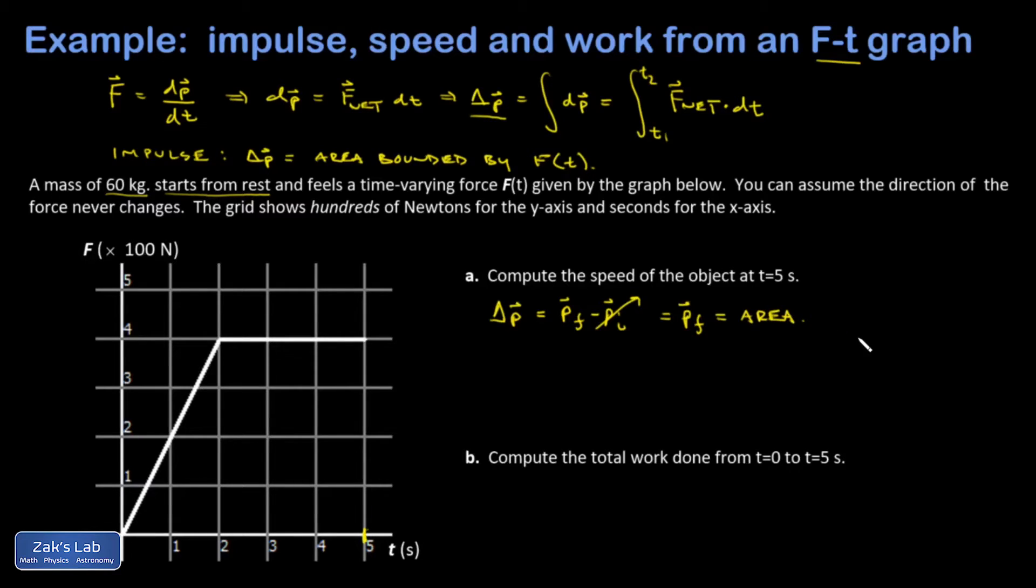So if I know the final momentum and I know the mass, I can get the final velocity and thus the final speed. So let's get the area under the curve. We can just look at this rectangle and this triangle and use geometry to get the area. There's no need for calculus here.